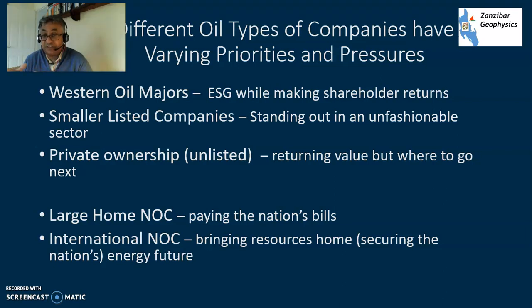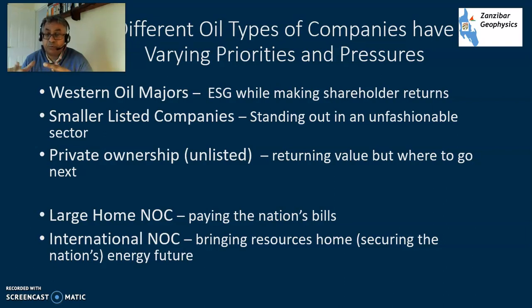And then private ownership - these are unlisted companies, either owned by private equity or rich individuals such as J.R. Ewing. Returning value, but where do you go next? Do you list? Do you sell out? Where next?